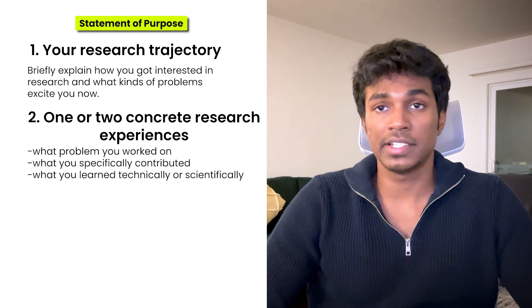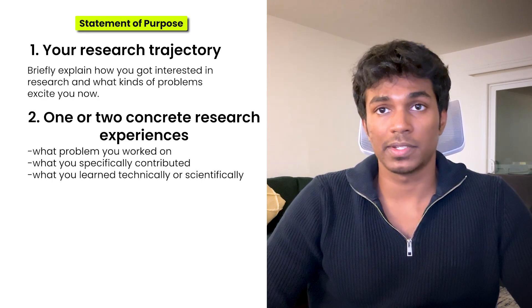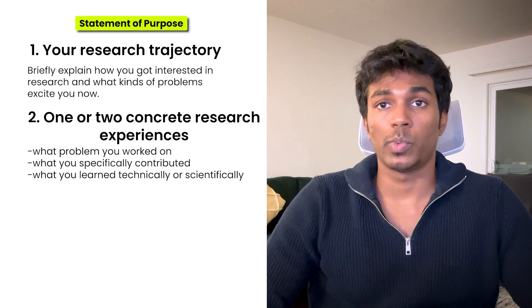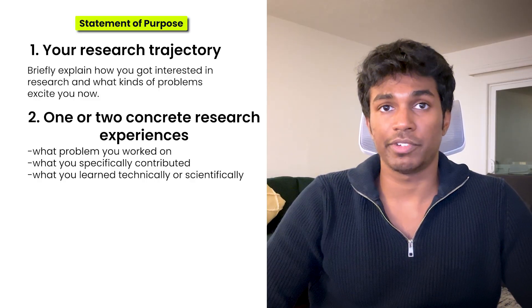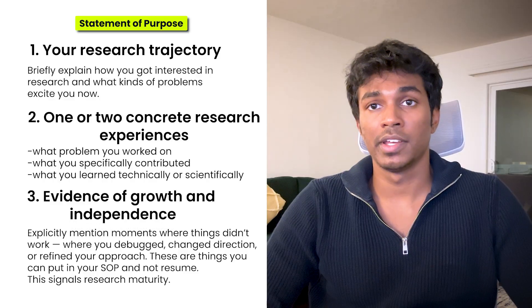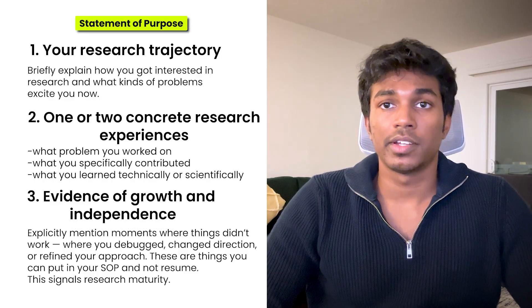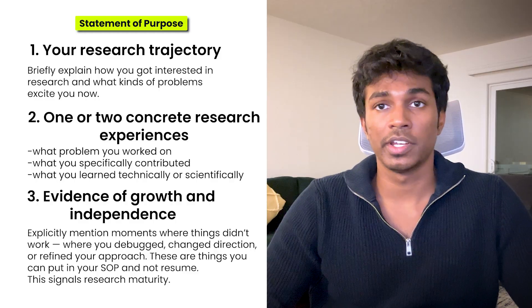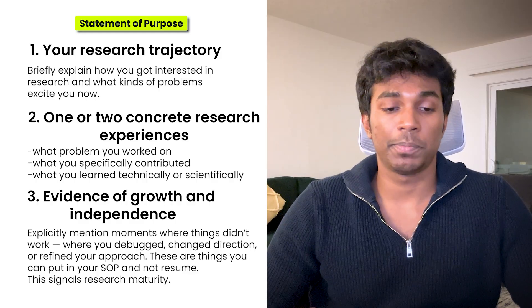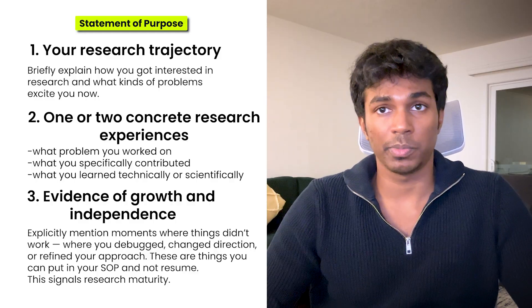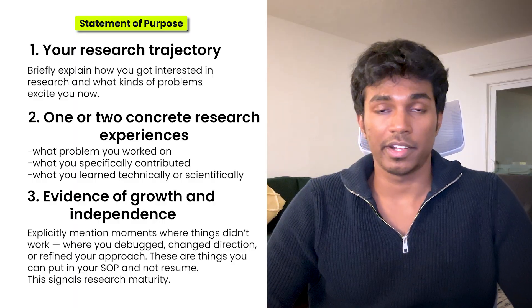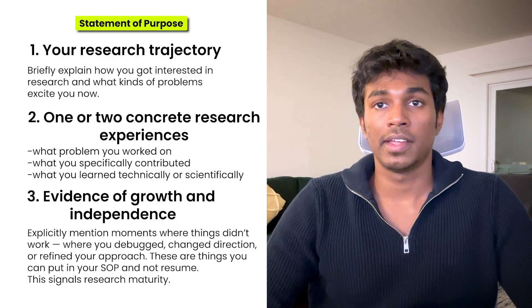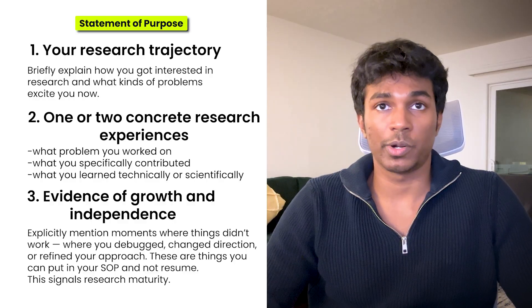You can mention one or two concrete research experiences. Pick a couple of projects and clearly state what the problem is, what you worked on, what you specifically contributed, and what you learned technically or scientifically. It's also important to mention where things didn't work, where you debugged, or you changed directions or refined your approach. These are things that you can put in your SOP and not in your resume, and these signal research maturity. It's important to highlight what didn't work and how you learned something out of it.